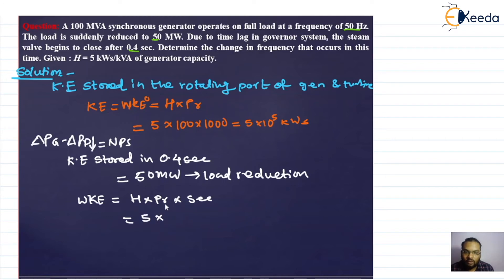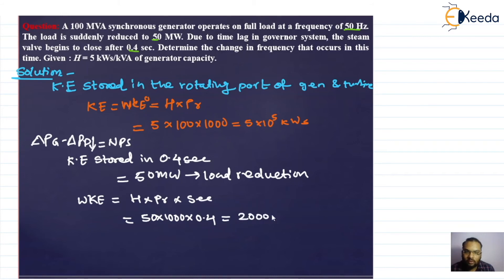The kinetic energy stored during 0.4 seconds is calculated as H × (load reduction in kW) × time = 5 × 50 × 1000 × 0.4 = 20,000 kW·s. This is the additional kinetic energy stored in the rotating parts at the new frequency.